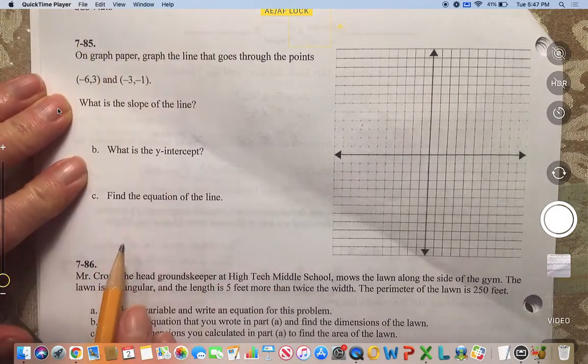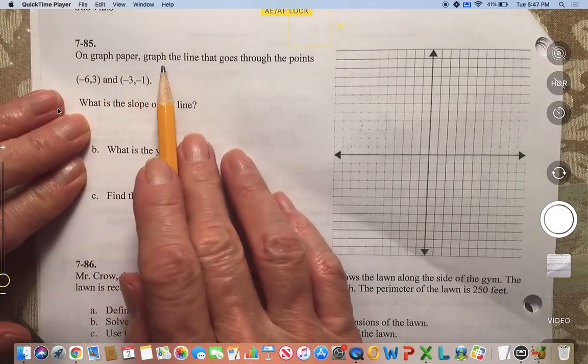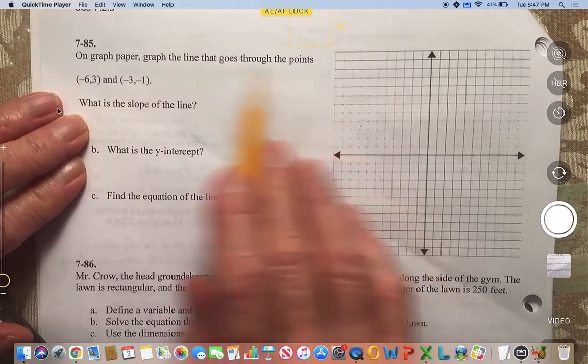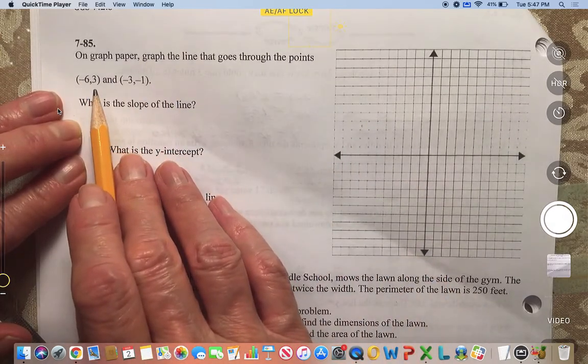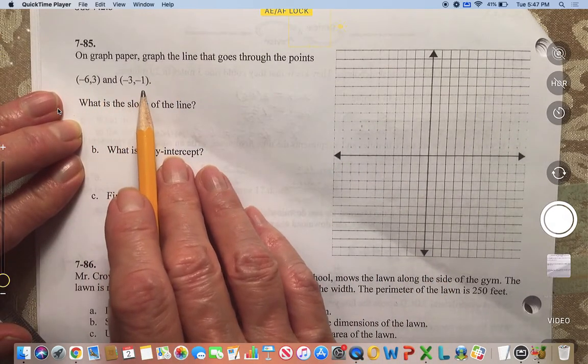This is problem 7-85. On graph paper, graph the line that goes through the points (-6, 3) and (-3, -1).